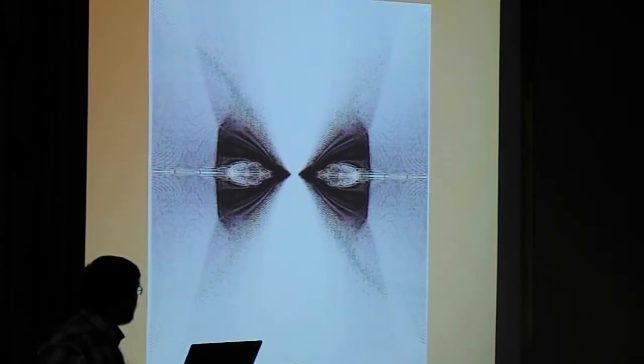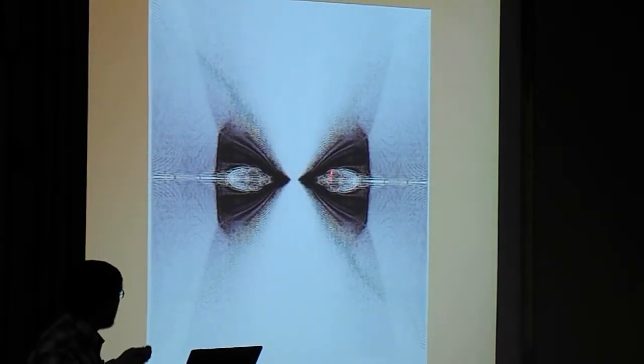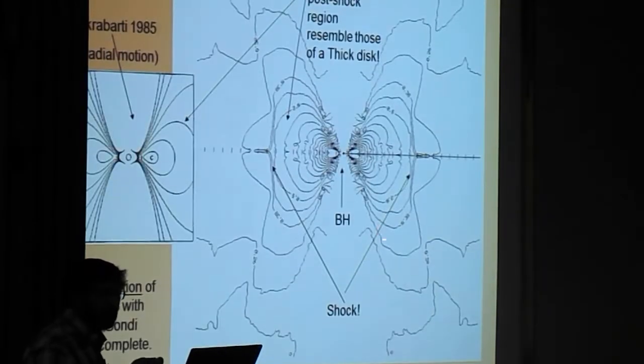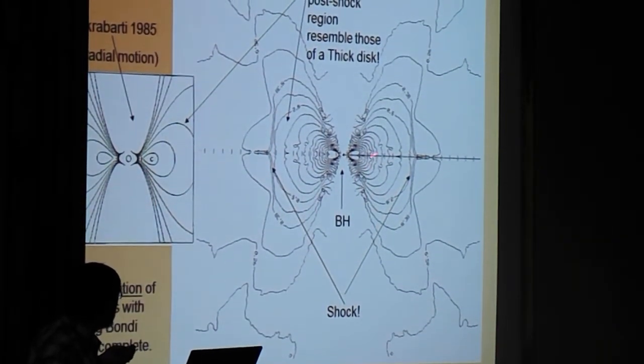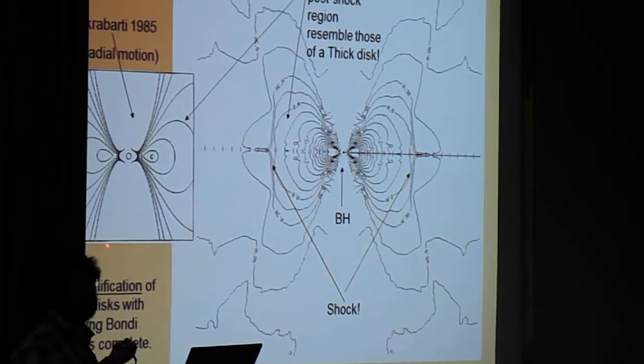Now, let us now, come back to our simulation, and draw, and draw the temperature contours. If you draw the temperature contours, of constant temperature, low and behold, these contours look like, the contours of thick accretion disk.